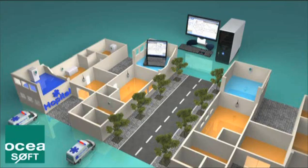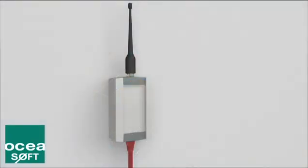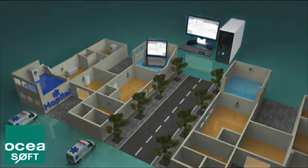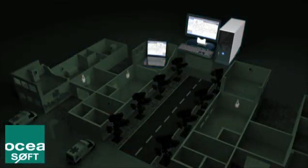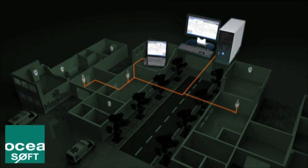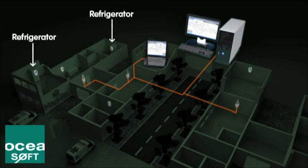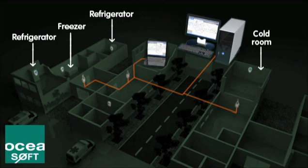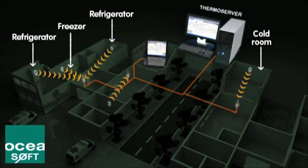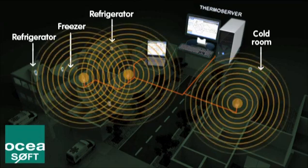Take a look at this hospital installation. A wireless receiver is connected to the computer network in each building. Wireless modules are installed to monitor critical equipment such as refrigerators, freezers, and cold rooms. All remote readings are transmitted to the Thermo Server software installed on the central computer.